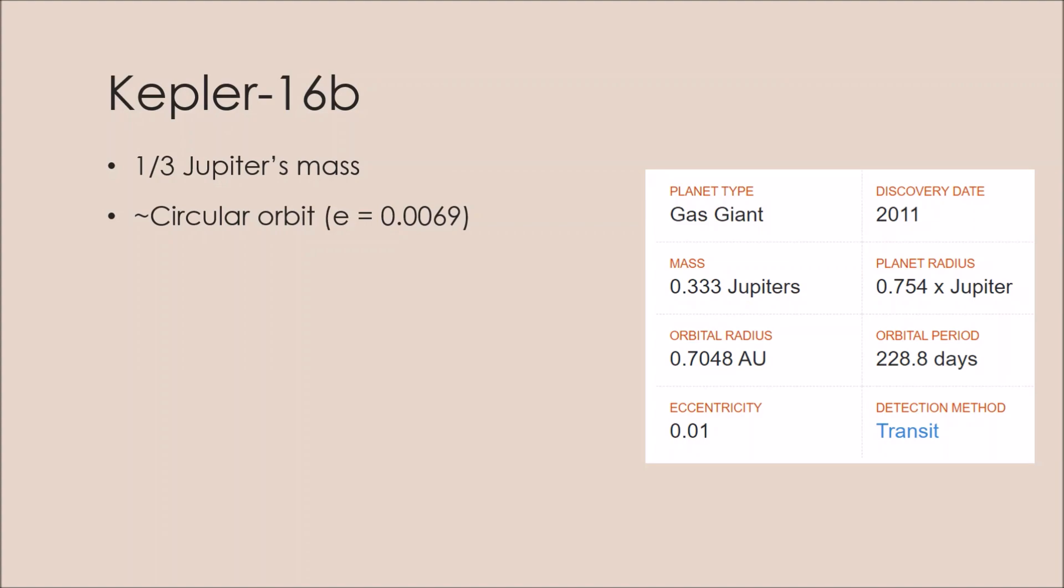Because of the many eclipses that produce data about the light that Kepler-16b blocks, the exoplanet is one of the best measured to date.